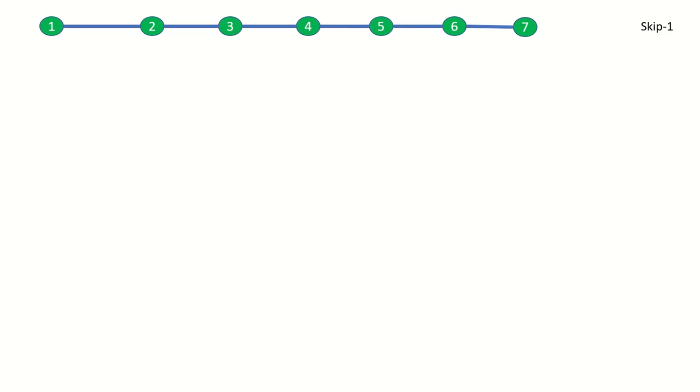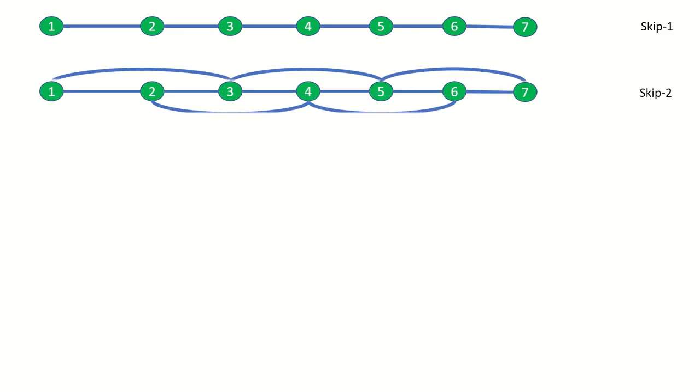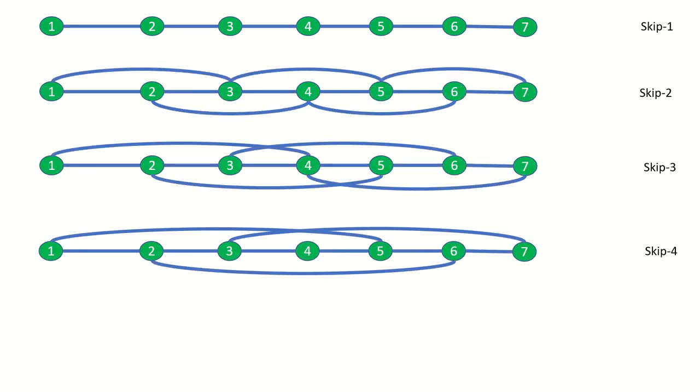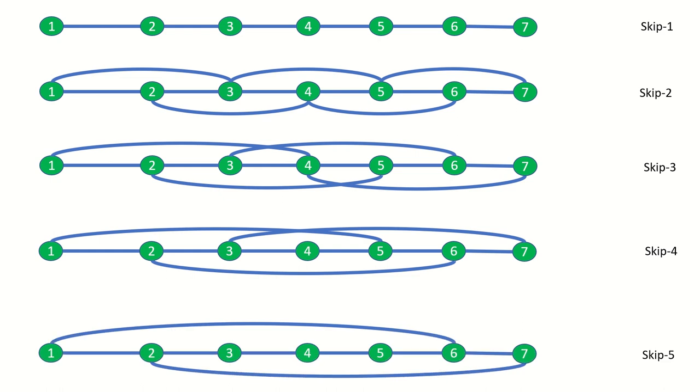Now where do we begin with something like this? I think it's best to focus on the first question of distance between the first and last vertex. It's a good idea to draw some skip x graphs of various sizes and skip lengths and calculate their distances. Once we have some observations we'll be able to figure out the pattern.